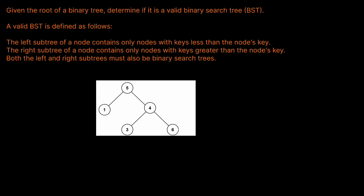Hello and welcome back to the Cracking FANG YouTube channel. Today we're going to be solving LeetCode problem 98: Validate Binary Search Tree. Given the root of a binary tree, determine if it is a valid binary search tree. A valid BST is defined as follows: the left subtree contains only nodes with keys less than the node's key, the right subtree contains only nodes with keys greater than the node's key, and both subtrees must also be binary search trees.